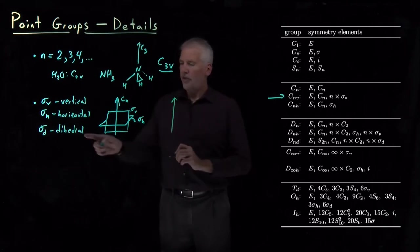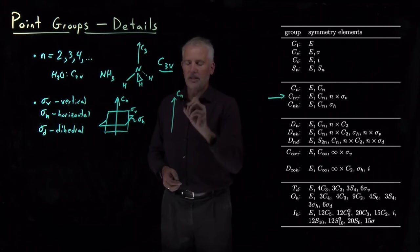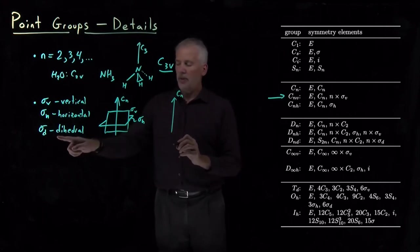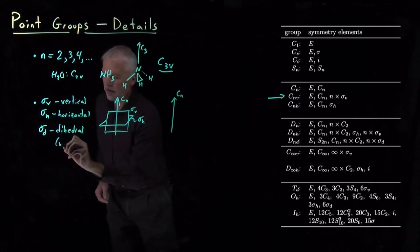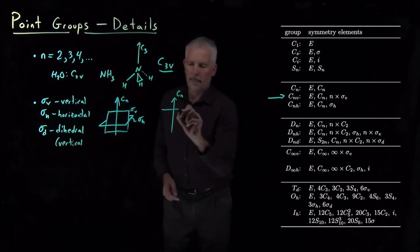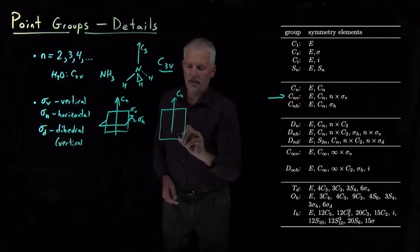A dihedral reflection plane, if I have a rotation axis, a CN rotation axis, a dihedral plane is also a vertical reflection plane, meaning it contains the C2 axis.